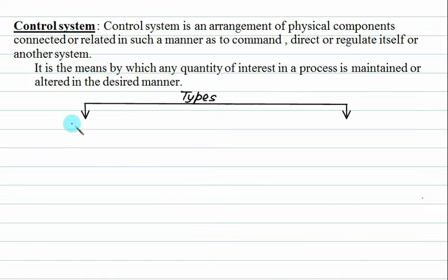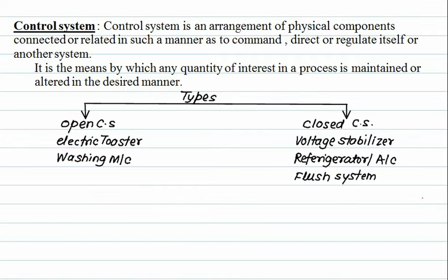There are two types of control systems. One is called open control system and the other is closed control system. Examples of open systems include electric toaster and washing machine. Open systems are basically low cost with simple arrangements.